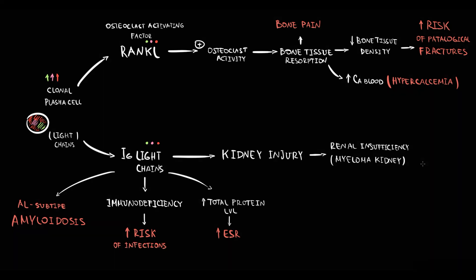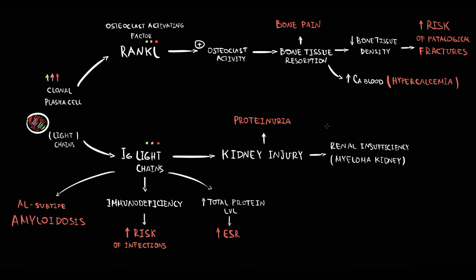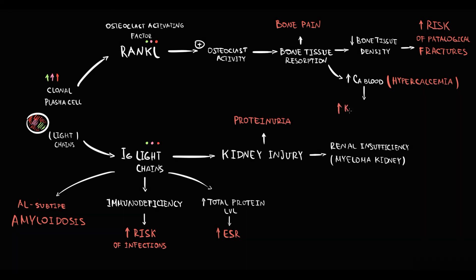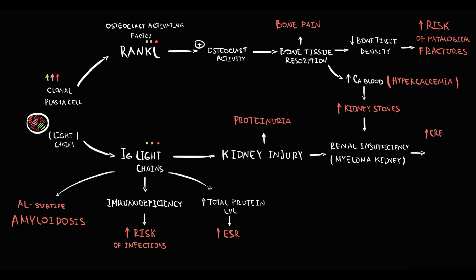After they cross renal tubules, light chains are excreted from the organism through the urine, so light chains can be detected in urine. And an increasing amount of monoclonal immunoglobulins in the urine causes proteinuria. Another problem is that the higher the blood calcium level, the higher will be the calcium excretion through the urine. And in kidney tubules, positively charged calcium can react with negatively charged phosphate groups or with oxalate, resulting in formation of kidney stones. So high blood calcium level causes increased formation of kidney stones that can aggravate renal injury, thereby contributing to renal insufficiency. Renal insufficiency manifests with elevation of blood creatinine and urea levels.